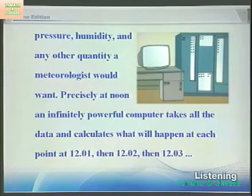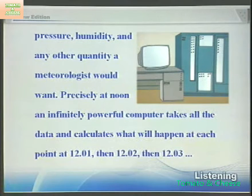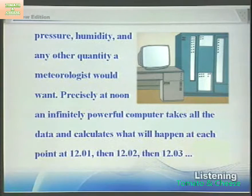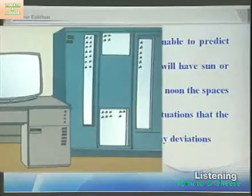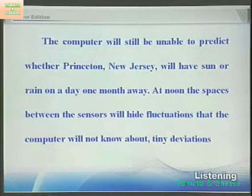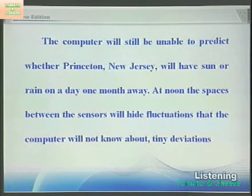Precisely at noon, an infinitely powerful computer takes all the data and calculates what will happen at each point at 12:01, then 12:02, then 12:03. The computer will still be able to predict whether Princeton, New Jersey, will have sun or rain on a day one month away.